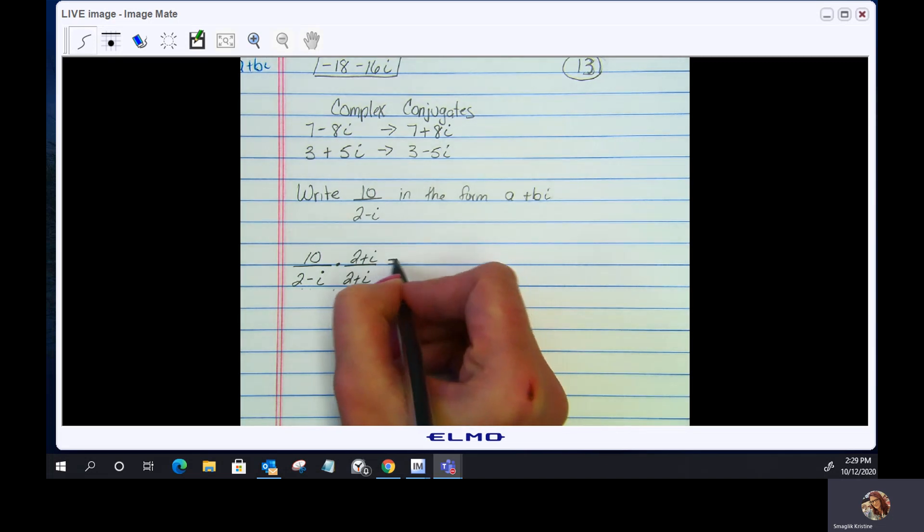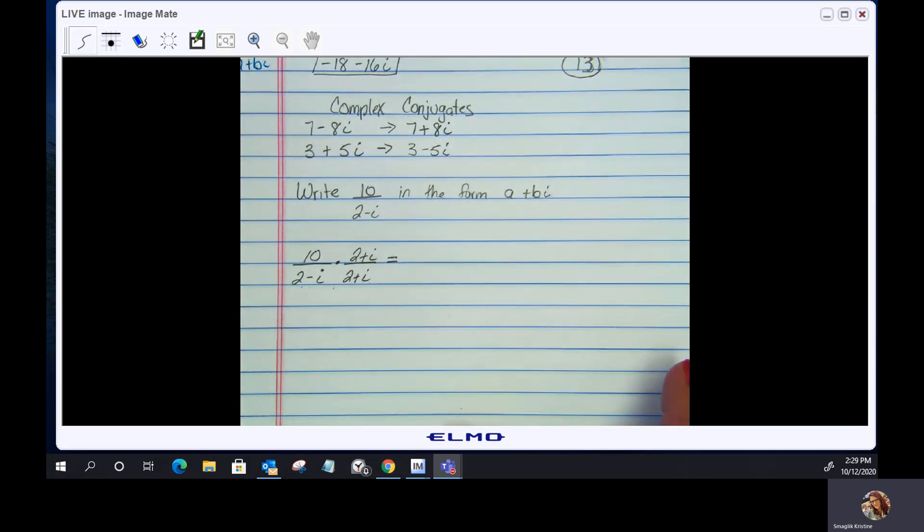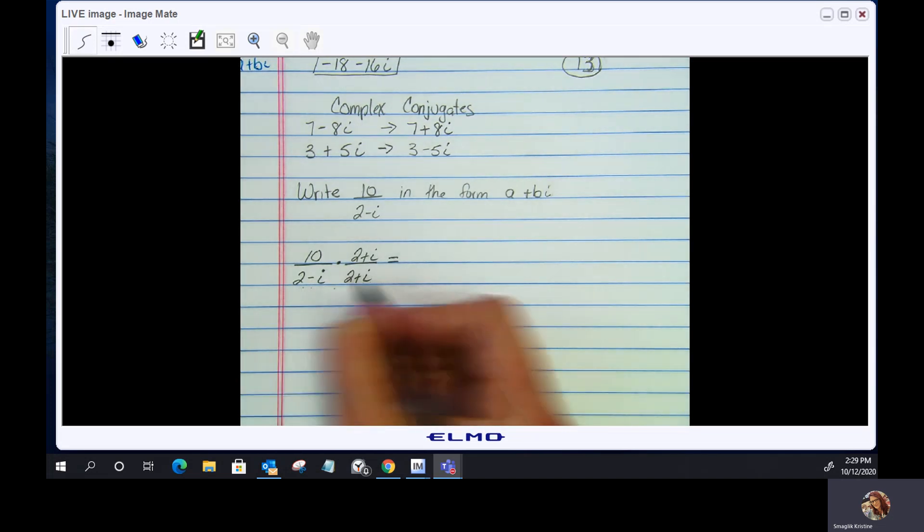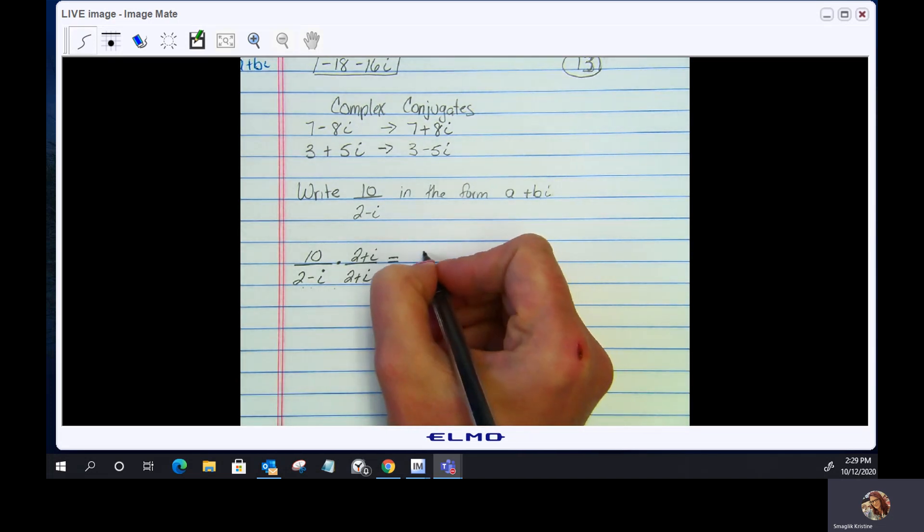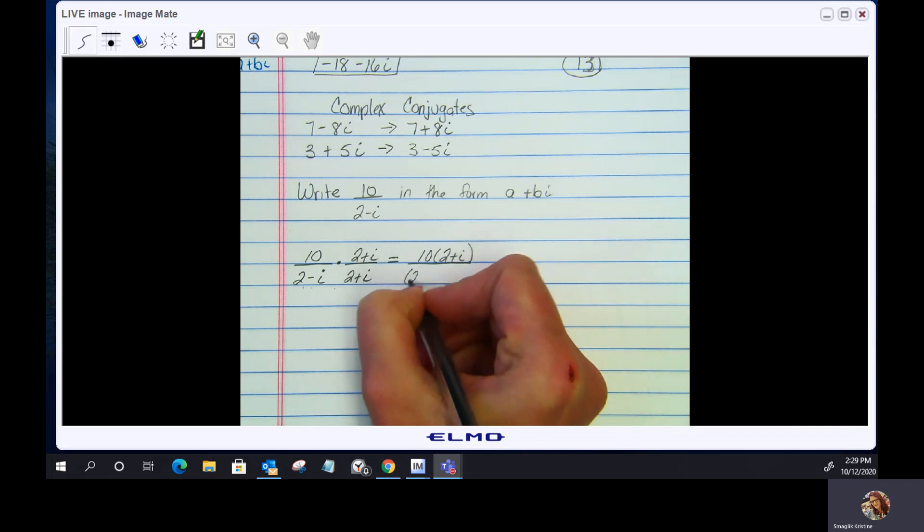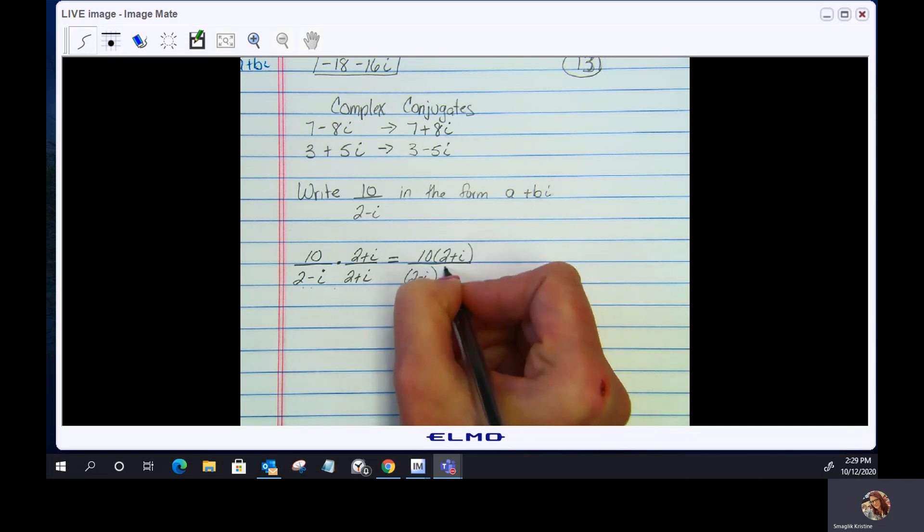I'm going to do this step by step. As you get comfortable with this, you won't need to show so many steps. I'm rewriting this as one fraction: 10 times the quantity 2 plus i, all over the quantity 2 minus i times the quantity 2 plus i.